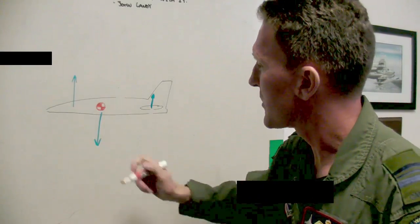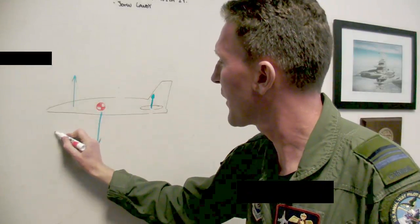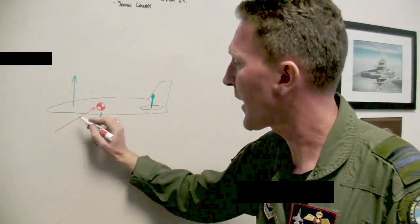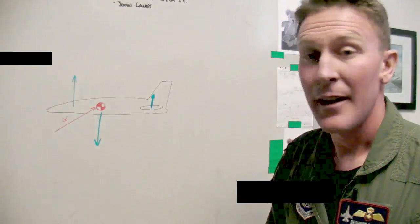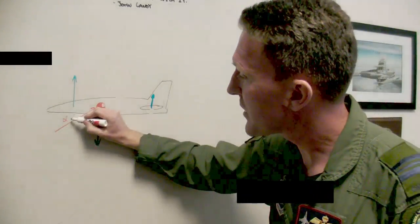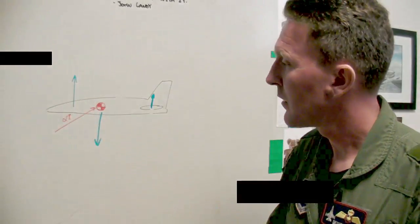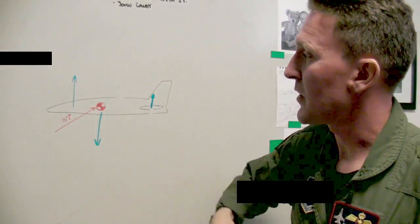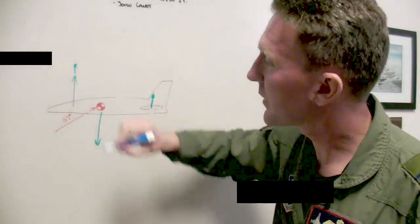Consider a relative wind that's approaching for simplicity the center of gravity here at a certain angle of attack alpha. Now the pilot pulls back on the stick or maybe there's a small perturbation in the airflow. That increases the angle of attack. When that happens, as you might expect, the lift increases.